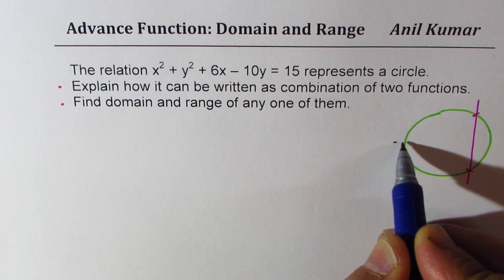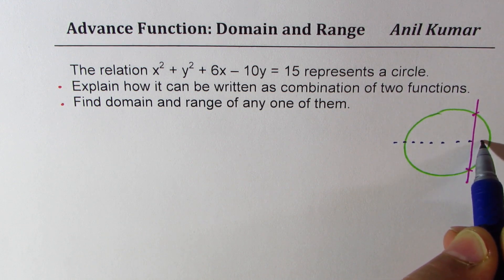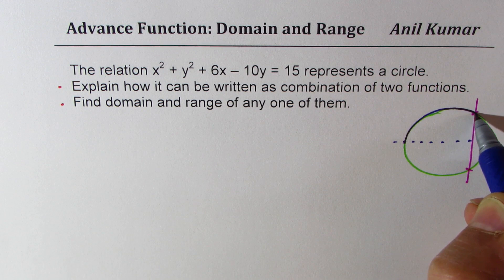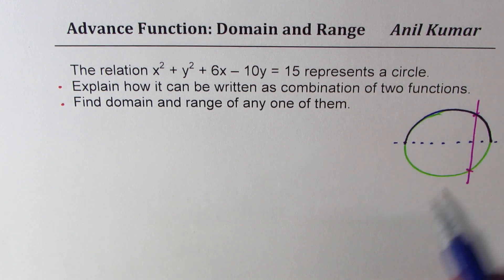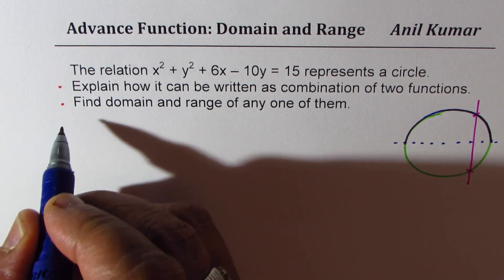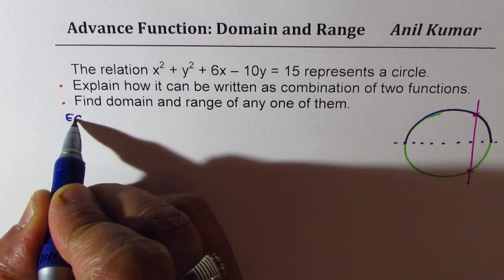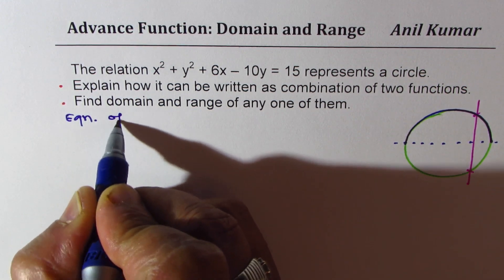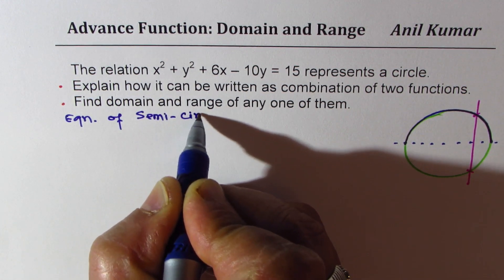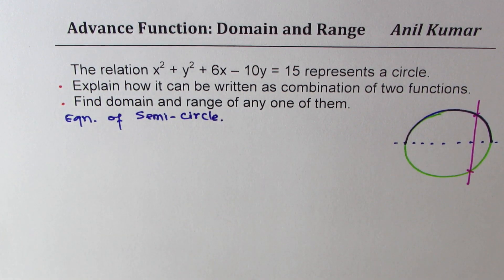So it is a relation. To make it a combination of two functions, we can consider the upper half of the circle or a semicircle as one of the functions. So the idea here is to get equation of a semicircle. So that is the idea.